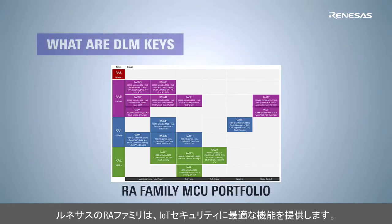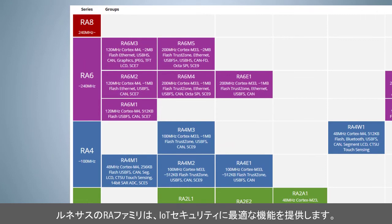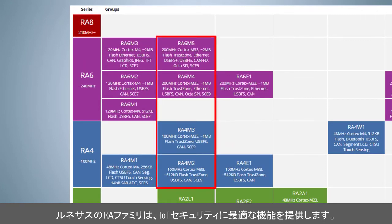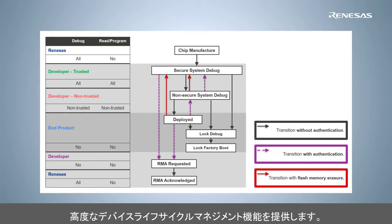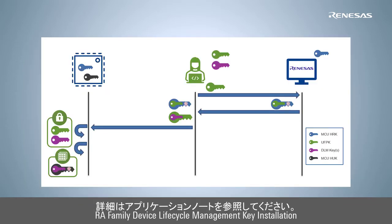RA family MCUs with the SCE9 Crypto Engine support Advanced Device Lifecycle Management, or DLM. The DLM state defines the permitted debugging and programming operations. During production programming, these interfaces can be permanently locked. DLM provides the optional ability to re-enable these interfaces by authenticated DLM state regression.